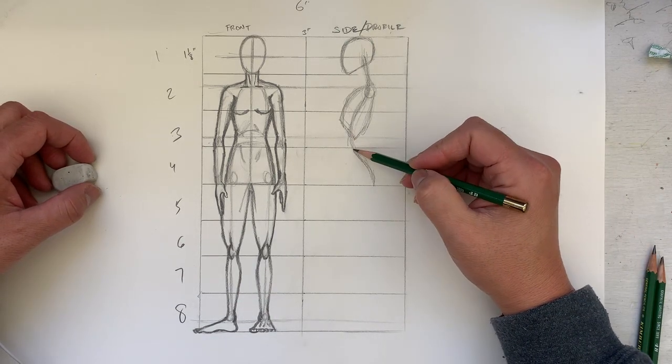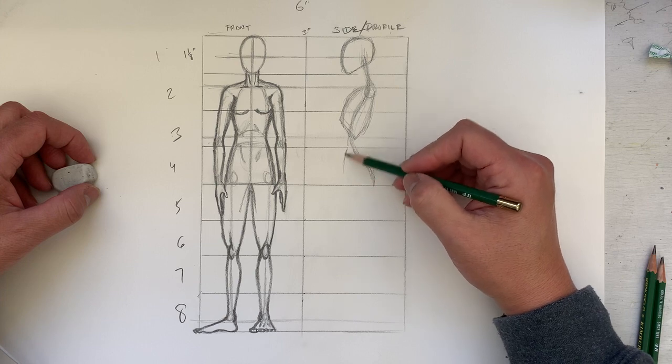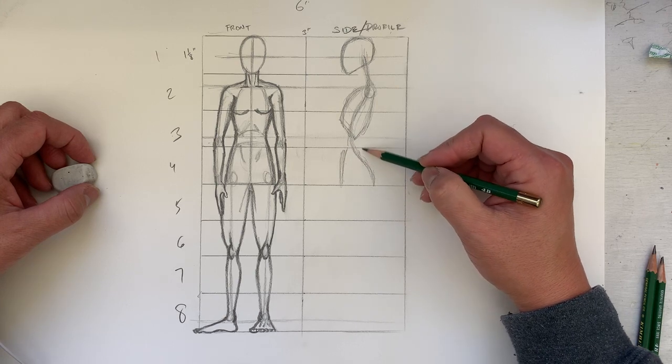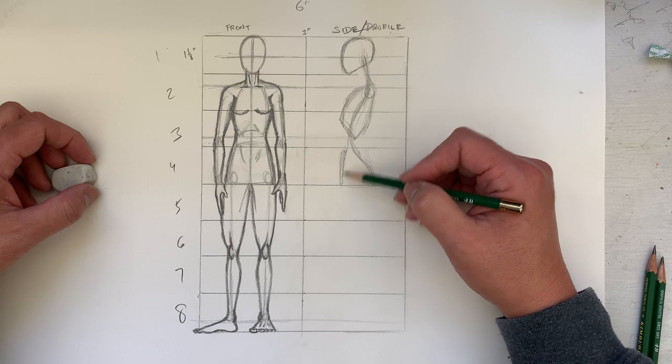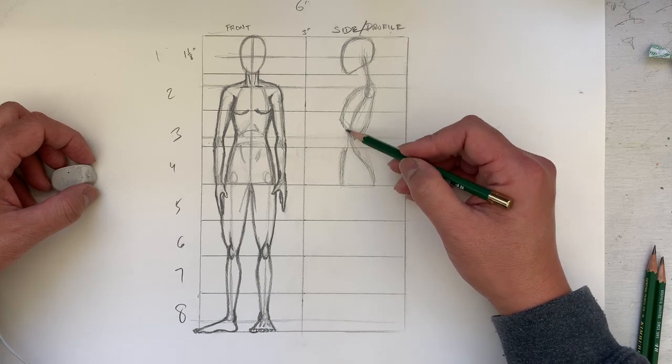We're going to go down to box four, and we're going to just put in place hips and stuff here as well.